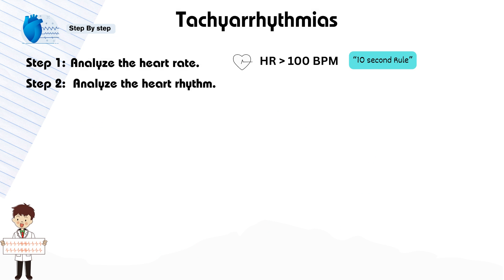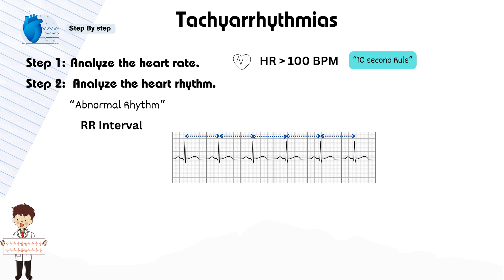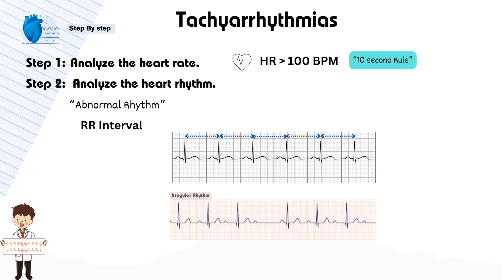Step 2: Analyze the rhythm. Tachyarrhythmias often come with an abnormal rhythm. Check the RR interval in the ECG strip to determine if it's regular or irregular. In a regular rhythm, the RR intervals between QRS complexes are consistent, while in an irregular rhythm, the intervals vary.